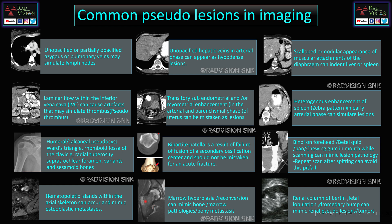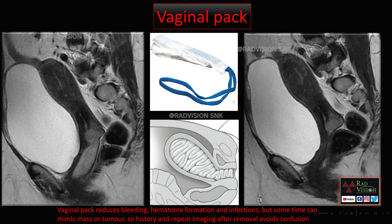Marrow hyperplasia or reconversion — that is, reconversion of yellow marrow into red marrow — appears hypointense on T1 and T2 and heterogeneously hyperintense on STIR, which should not be mistaken for bone or marrow pathologies. Sometimes renal column of Bertin, fetal lobulation, or dromedary hump can mimic renal pseudo lesions. This covers the common pseudo lesions in imaging.